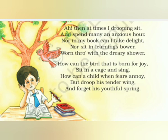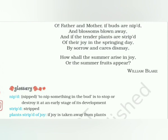In the fourth paragraph, he compares himself to this bird and to a child who has so many fears. These fears keep coming to his mind and he does not know how to deal with it because he is being forced to sit in the classroom. Now coming to the last two paragraphs — O father and mother, if buds are nipped and blossoms blown away and if the tender plants are stripped of the joy in the springing day by sorrow and cares dismay, how shall the summer arise in joy or the summer fruits appear?